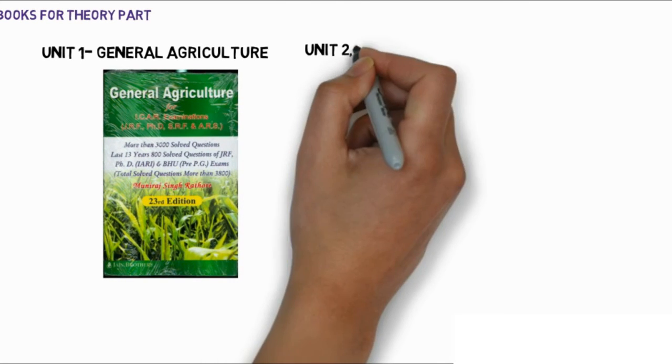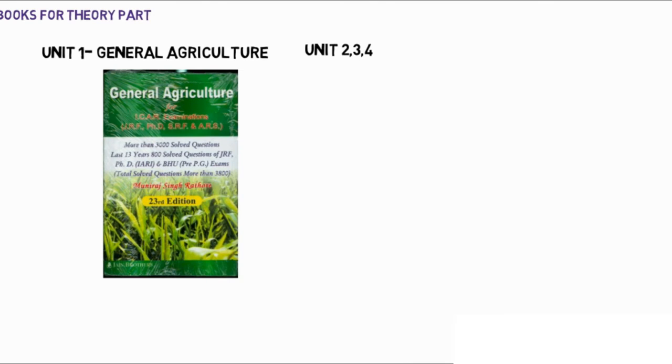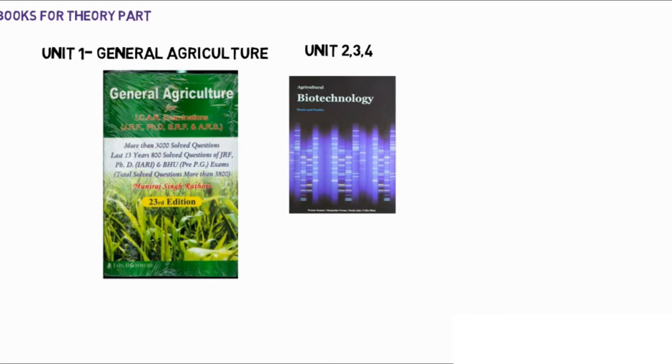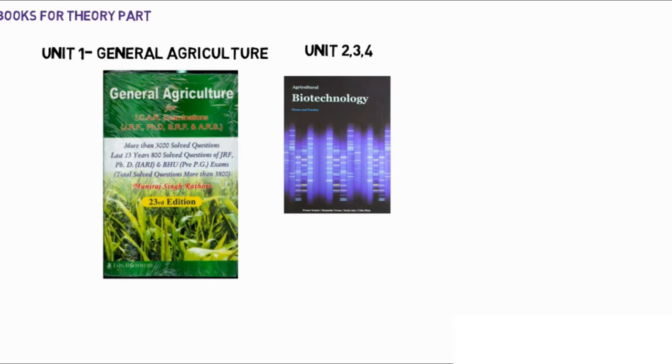For Unit 1, that is general agriculture, you have to follow Muniraj Sirator. And for Units 2, 3, and 4 — that is physiology, biotechnology, and biochemistry — you have to follow Agriculture Biotechnology written by Pranav Kumar.